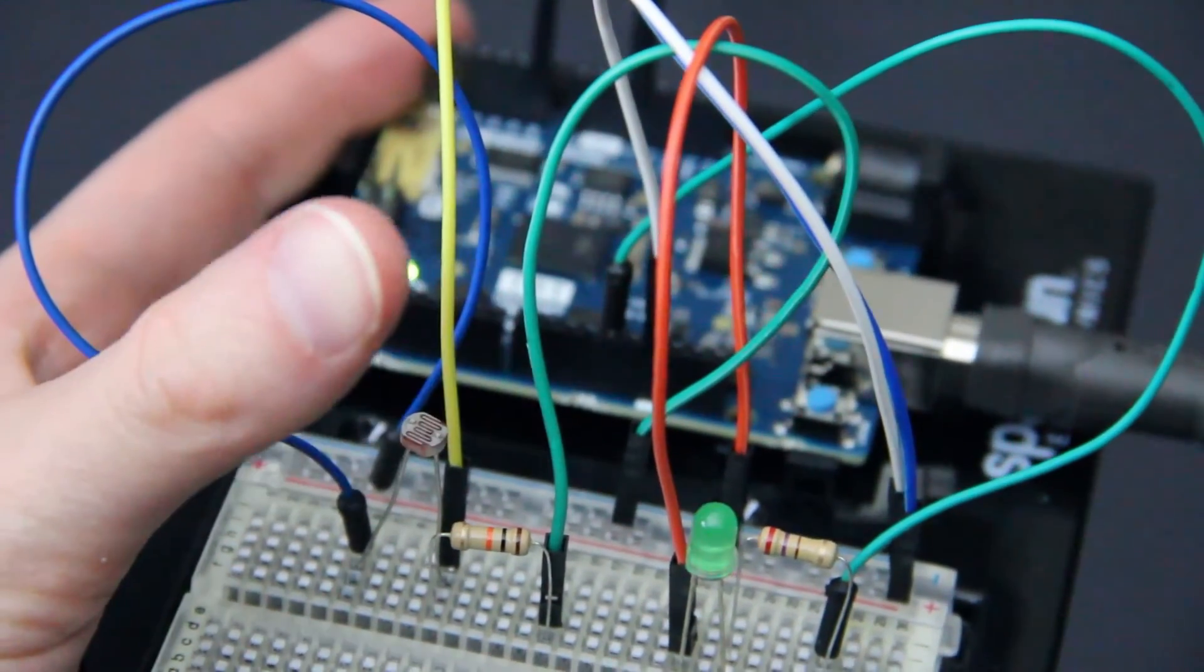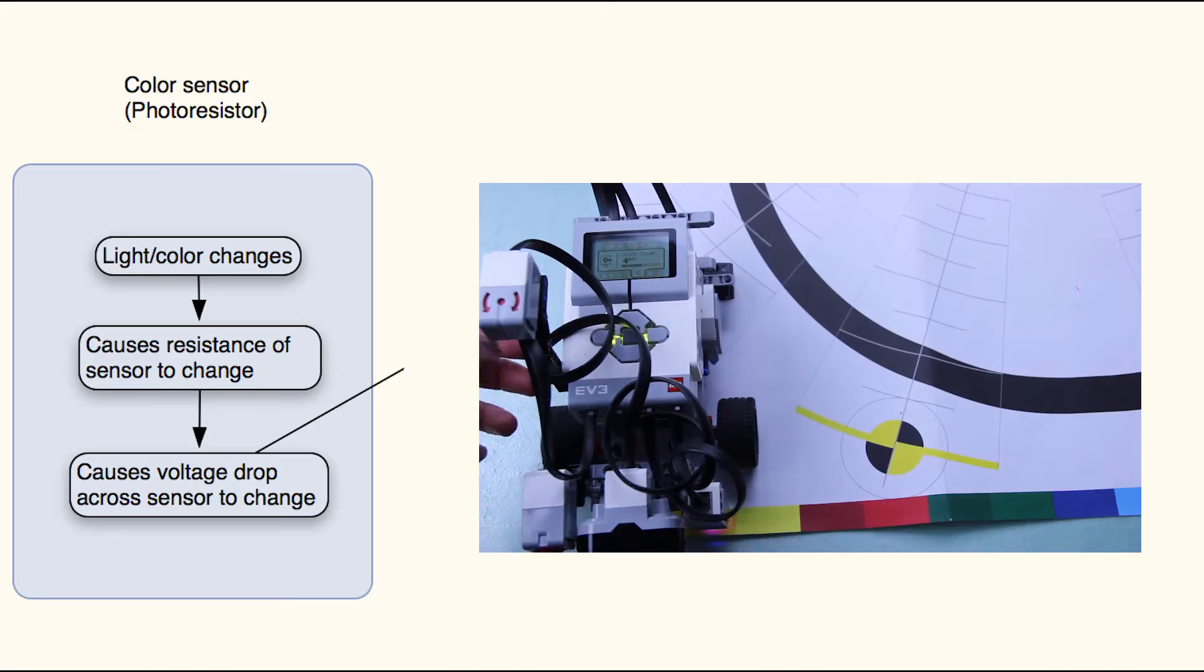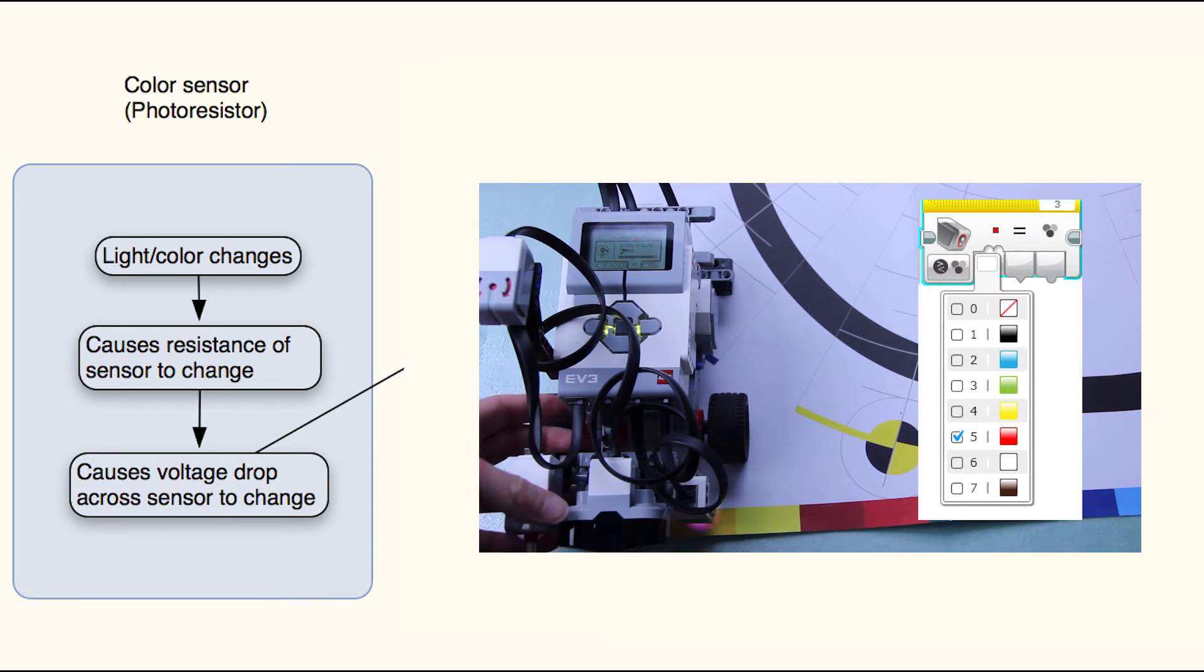Like when the ambient light goes down, you can turn on a nightlight. The color sensor on our robot is similar to this photoresistor. As the light changes, the resistance of the sensor is altered.